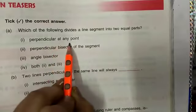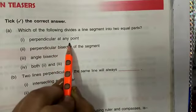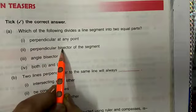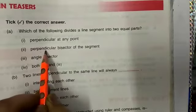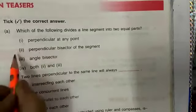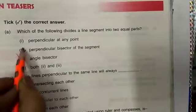Perpendicular at any point? No, it just makes an angle of 90 degrees. Perpendicular bisector of the segment? Yes, it makes an angle of 90 degrees and divides the line into two equal parts. So this is the right option, number 2.